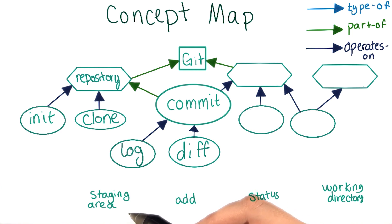So it's pretty related to the concept of a commit. Git add and git status both work on the staging area to help you make the commits. Both of these are going to have operates on connections to the staging area.